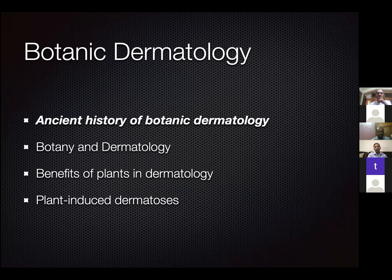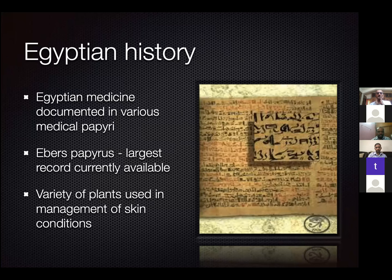Let's start with the ancient history of botanic dermatology. Egyptian and Indian medicine actually predates European science by many centuries. Egyptian medicine was documented in papyri — papyrus are tall aquatic plants which grow along the Nile River, and their stems were used to document notes. The papyri with the most information on medicine are the Smith's Papyrus and the Ebers Papyrus. The Ebers Papyrus is currently the largest record of medicine, particularly dermatology, and it's in the Leipzig University Library.